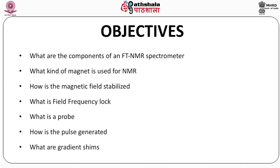The objectives of this module are to explain what are the components of an FTNMR spectrometer, what kind of magnet is used for NMR, how is the magnetic field stabilized, what is field frequency lock, what is a probe, how is the pulse generated, and what are gradient shims.